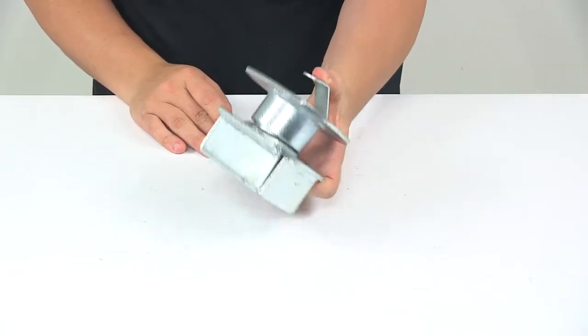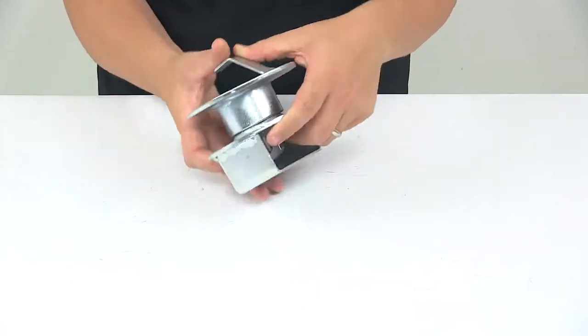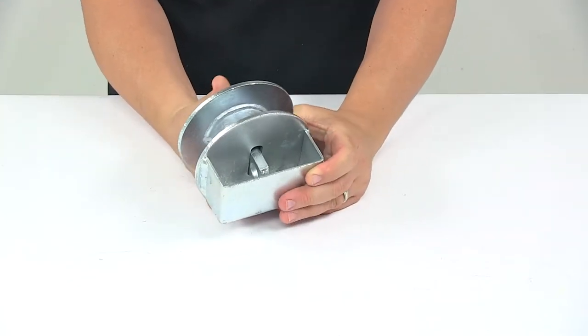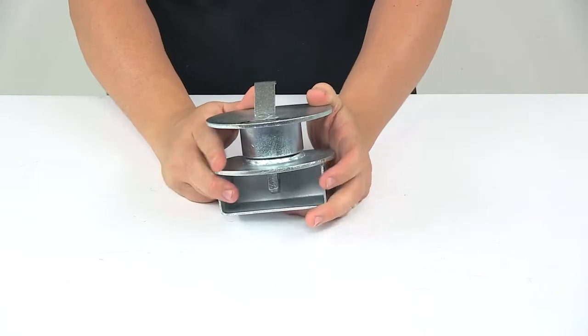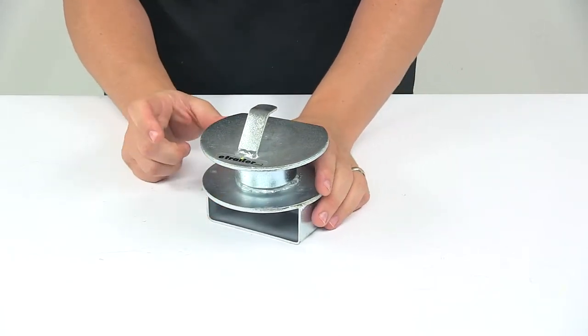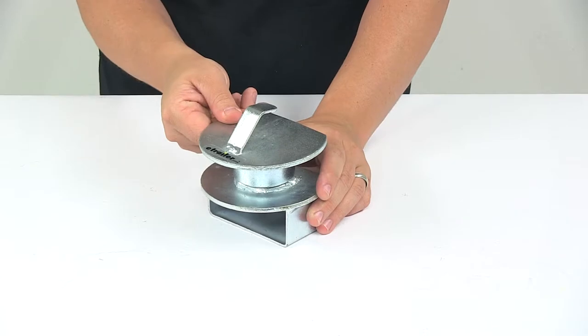It's made from a durable steel construction and it is zinc plated to resist rust and corrosion. It fits into all standard two and a half inch to three inch lunette rings and that's the inner diameter measurement.